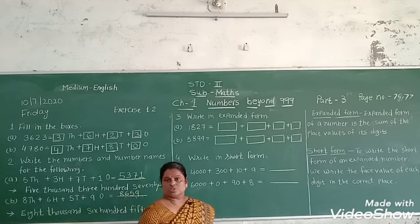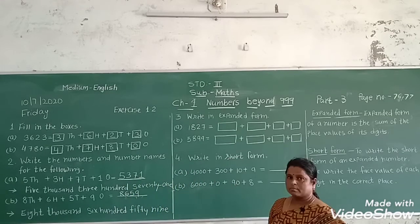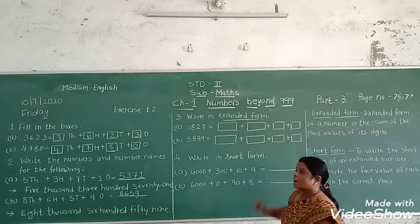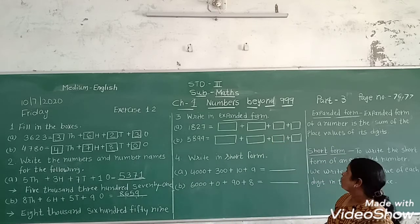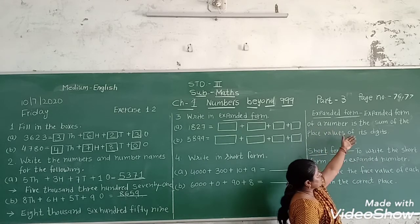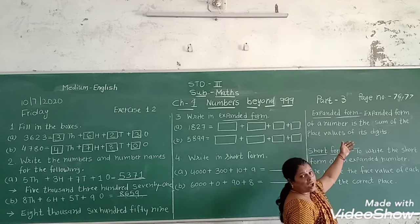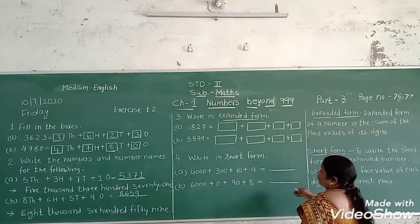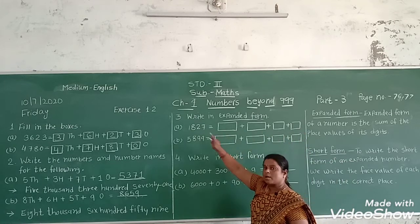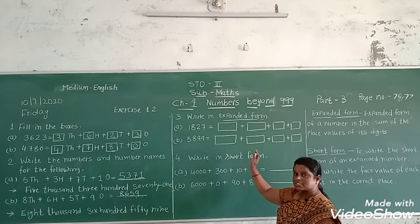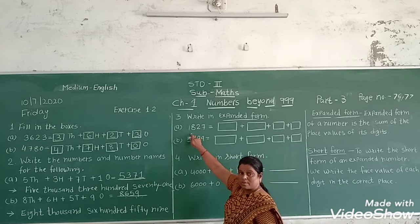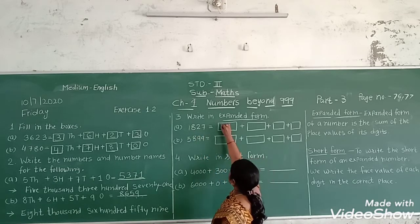Now the third question: write in expanded form. What is expanded form? The expanded form of a number is the sum of the place value of its digits. First we write the place value. One is in the thousands place, so the place value is one thousand.